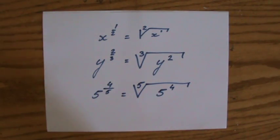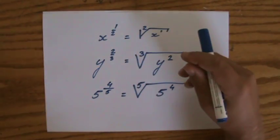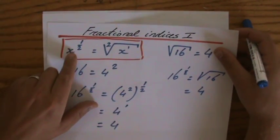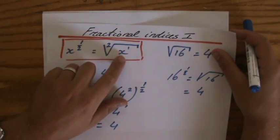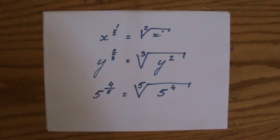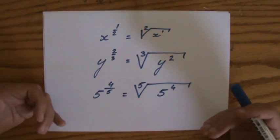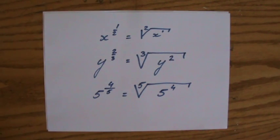Okay, so this is the relationship between a fractional index and you turn that into a root. x to the power of a half is the square root of x to the power of 1. And if you know that one and all the other examples, you can derive from it. Okay, next video: example questions.